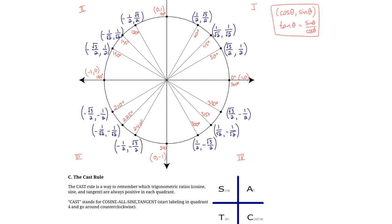There is one final rule you need to learn: the CAST rule. It helps you remember which trig ratio is always positive in each quadrant. We label it C-A-S-T: Cosine is always positive in the fourth quadrant — that's where it starts. All trig ratios are positive in the first quadrant. Sine is always positive in the second quadrant. Tangent is always positive in the third quadrant. It starts in quadrant 4 with cosine and goes counterclockwise.